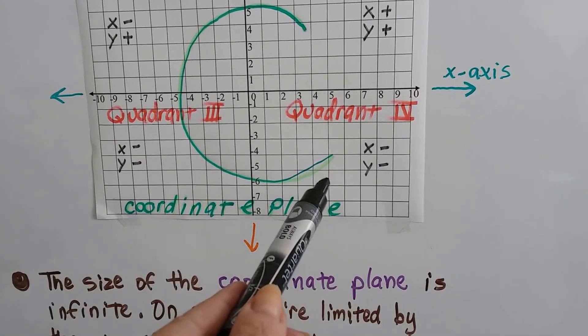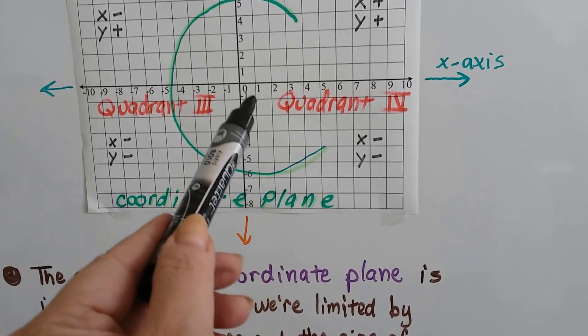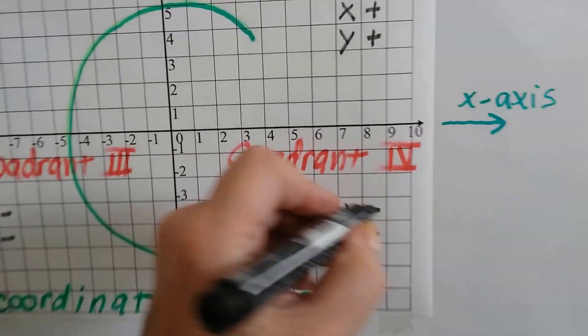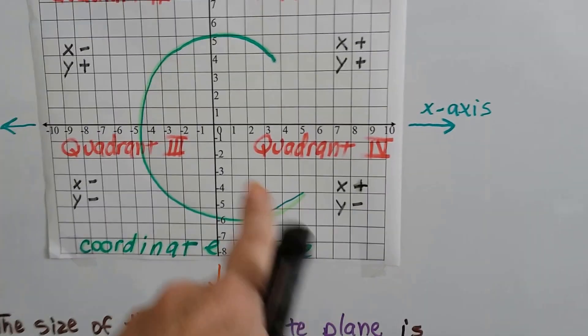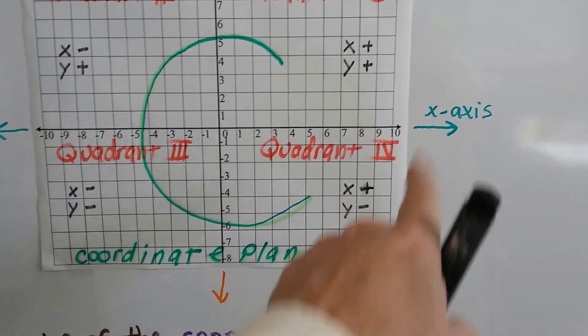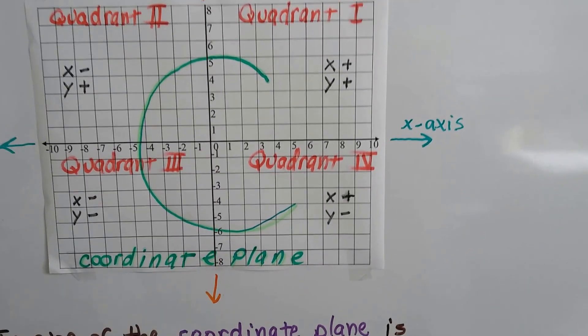When we get into quadrant 4—and these are written in Roman numerals—we have a positive for x and we have a negative for y. Because now these are positive numbers for x, but y is negative. So see how it went?